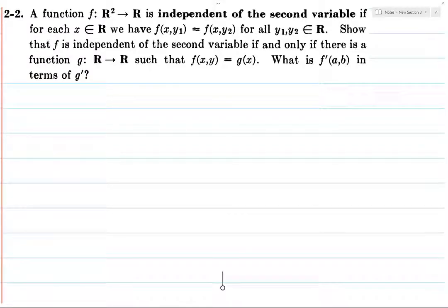All right, so functions being independent of variables means that it's not dependent on the variable. Show that f is independent of the second variable if and only if there is. Okay, so obviously, let's do it.